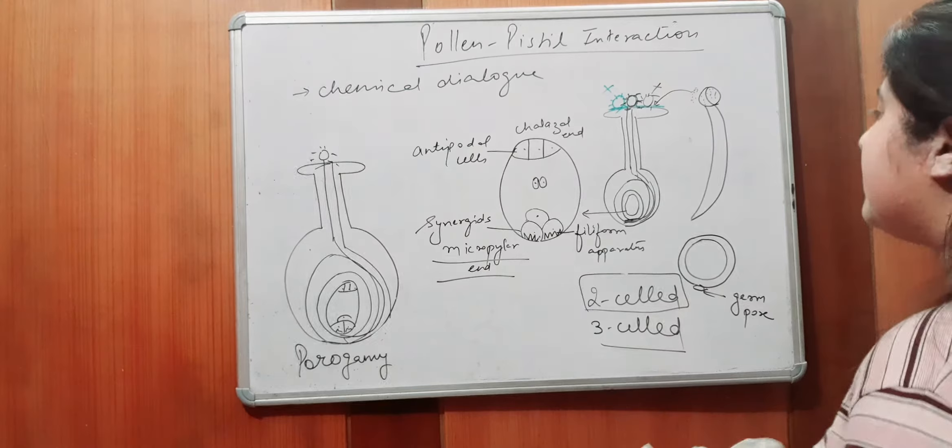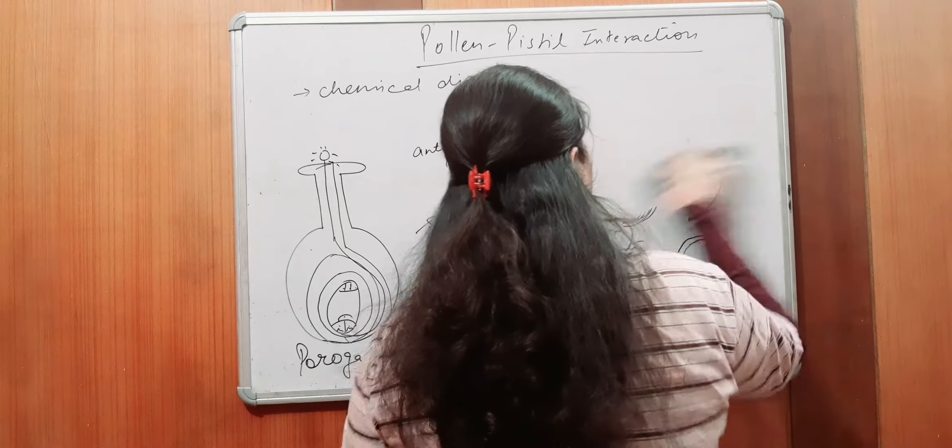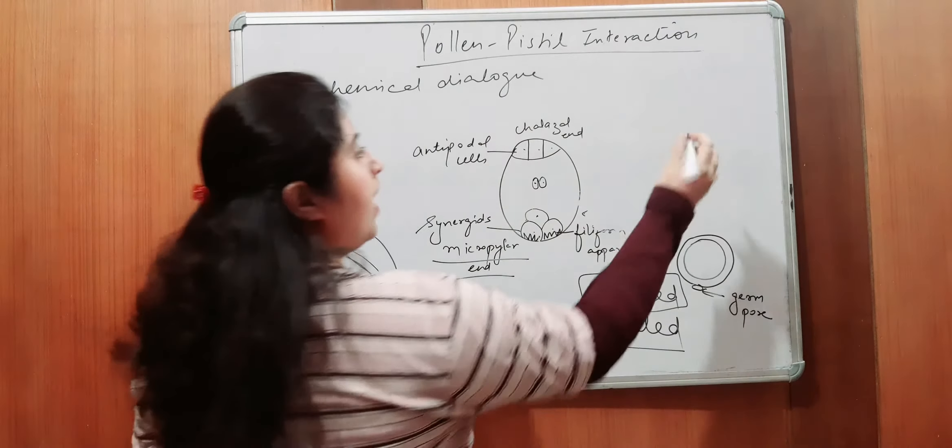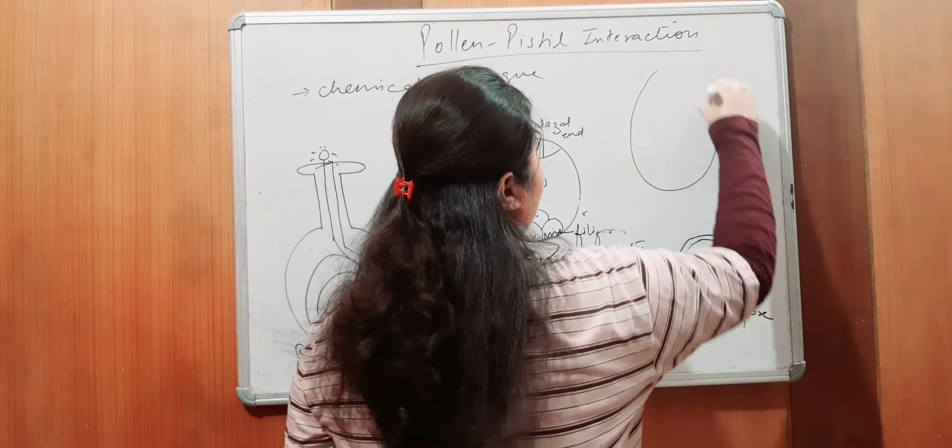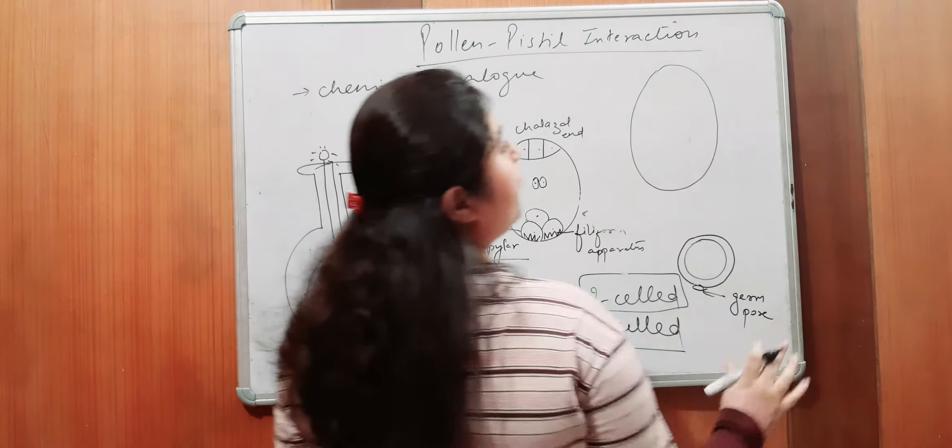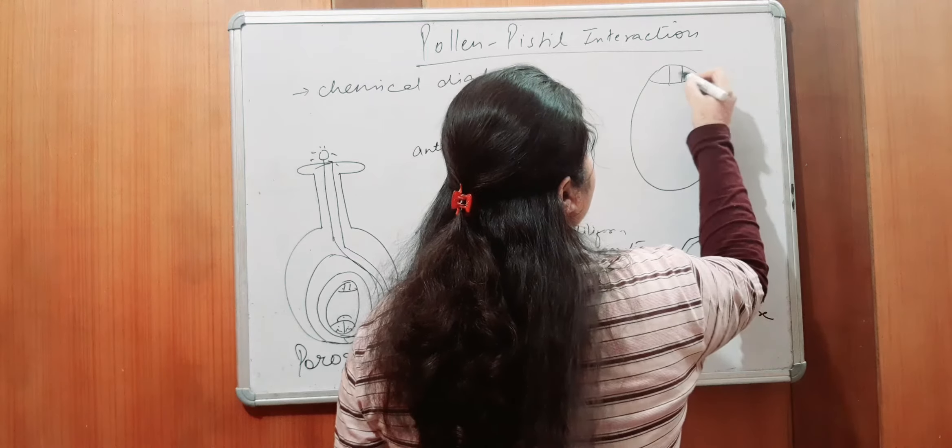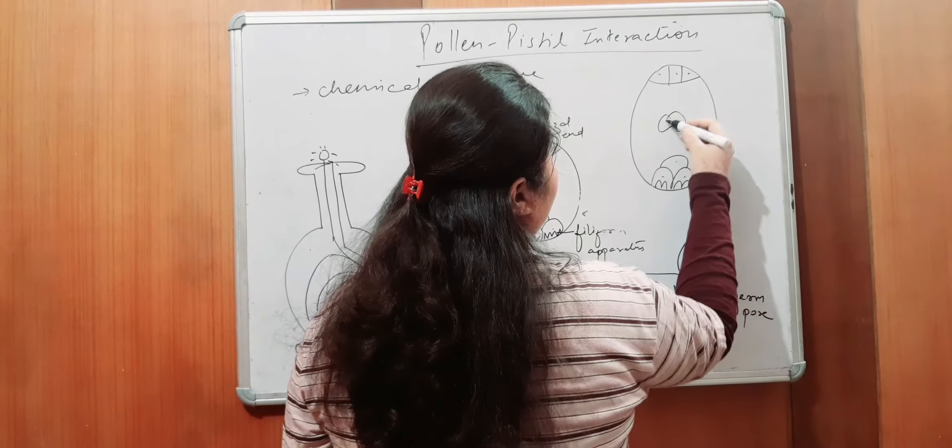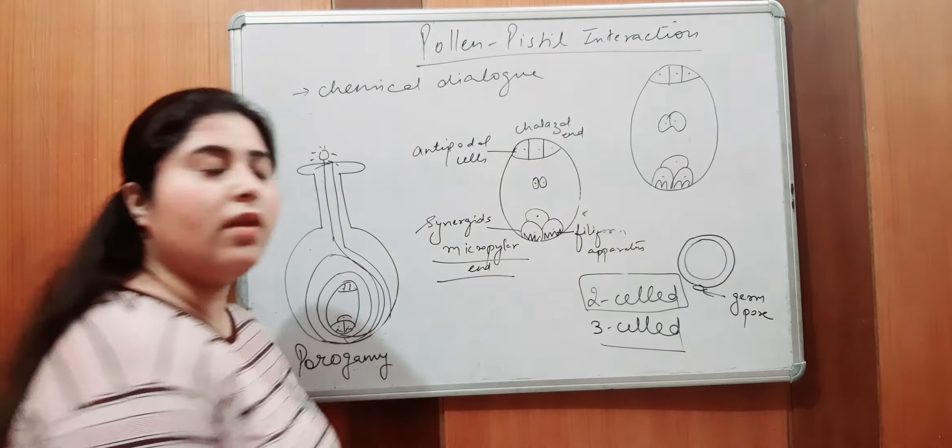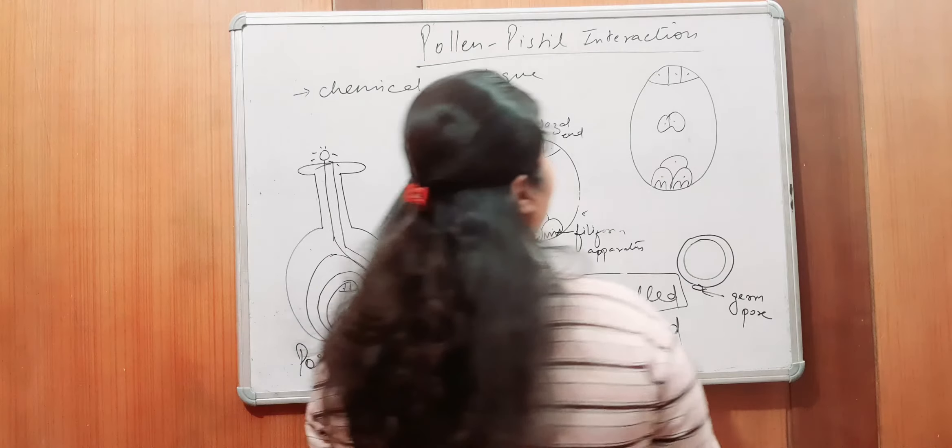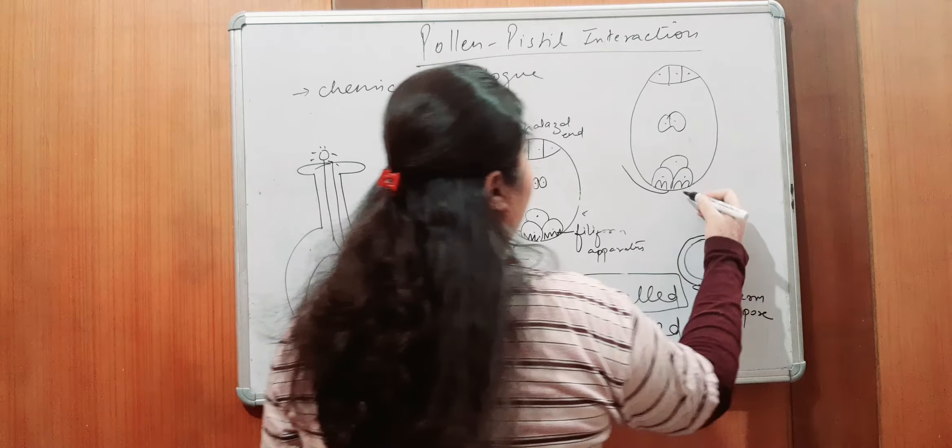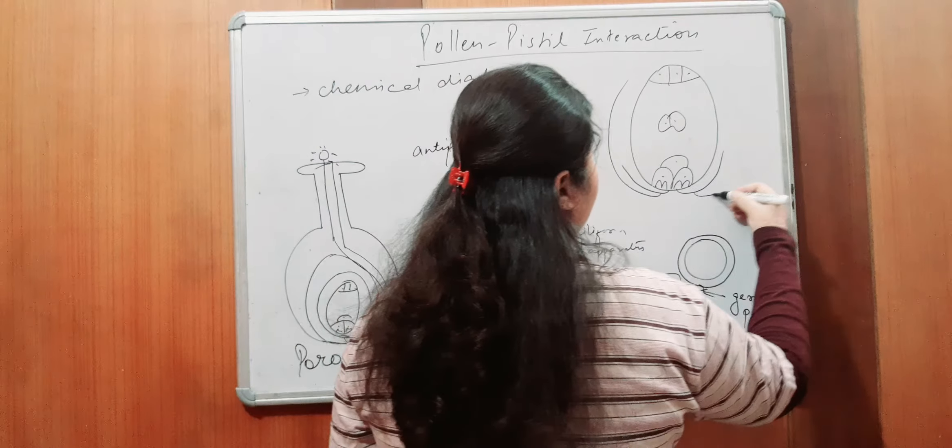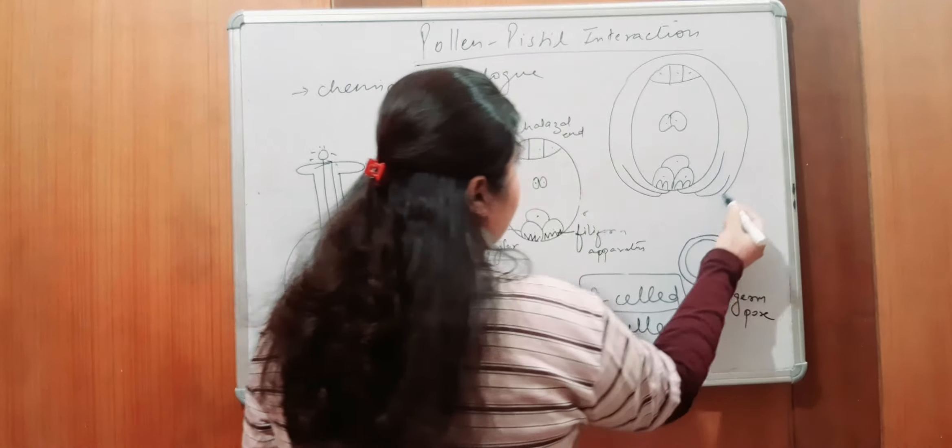But, in some of the cases, there is the chances of different routes to enter. Yeh dekhoj, maan lo, this is your female gametophyte, this is your chalazal end. These are your synergids having some filiform apparatus and egg apparatus and the polar nuclei into the central cell, right? Now, what is happening? Here are its integuments. Let's suppose, here are its integuments.